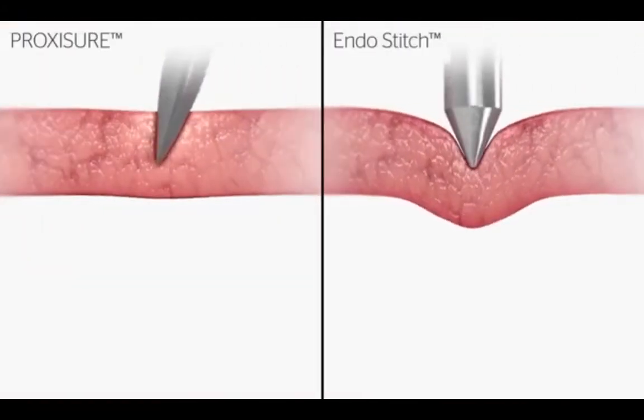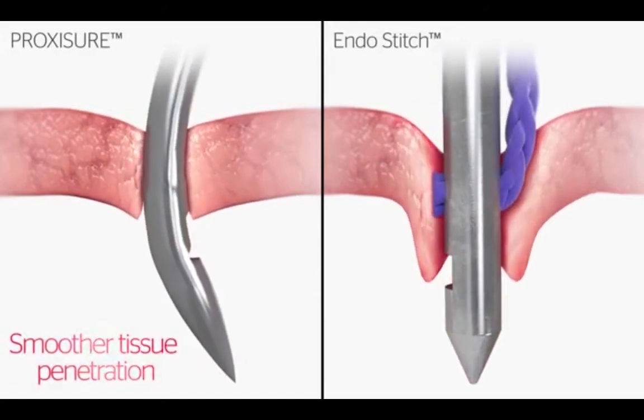ProxyShore curved taper point needle and swage design promotes smoother tissue penetration than endostitch which could lessen tissue trauma.